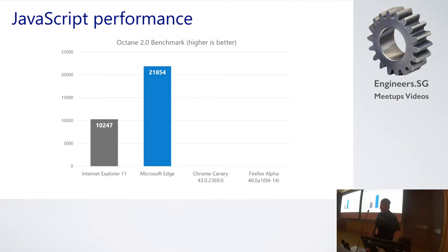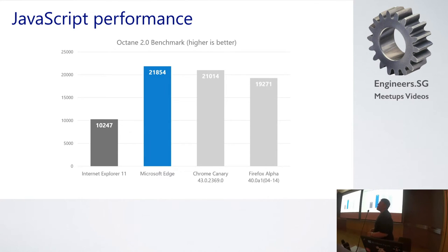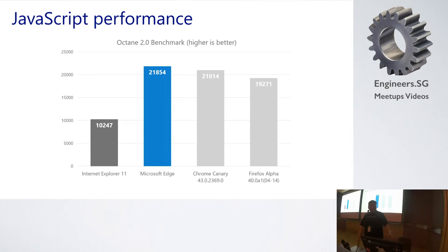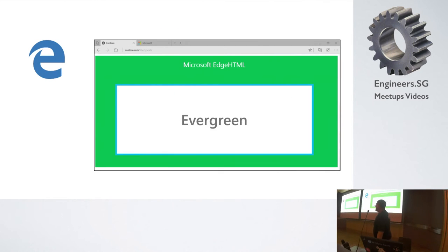Someone even used the Octane benchmark — that's a Google speed test. And Edge is evergreen. There will be no more 'new Windows, then new IE' — the Edge and the Windows have a different update cycle.